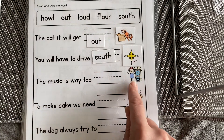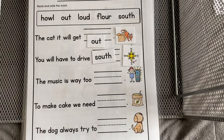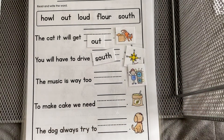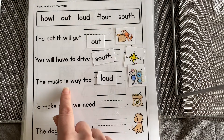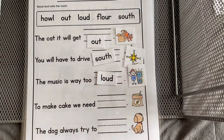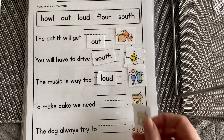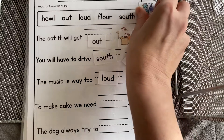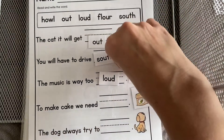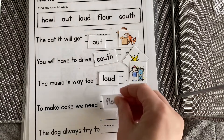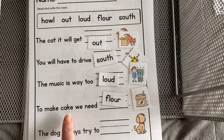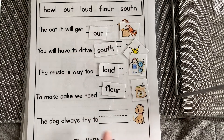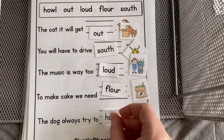The music is way too — oh, he's holding his ears. I think the music may be too loud. The music is way too loud. To make cake, we need — that is flour. To make cake, we need flour. The dog always tries to — what is that dog doing? Howl.